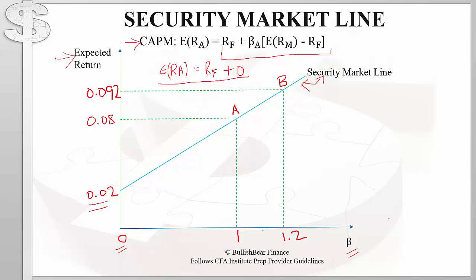Looking at point A on the security market line, it corresponds to a beta of 1 and an expected return of 8%. We can look at any point on the security market line and it will tell us the expected return for a given level of risk. At point B, for a beta of 1.2, we have an expected return of 9.2%.